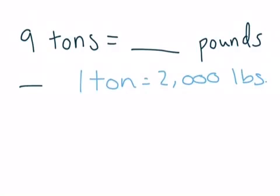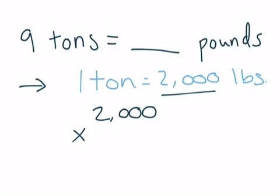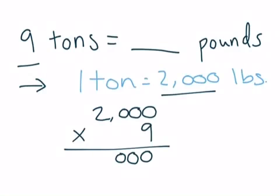So, if I know this information, then I can use this to solve for my equation that I have. So, I take my pounds, 2,000, and I want to multiply that by how many tons I have. So, I multiply that by 9. So, if you just quickly do the math, I have three zeros, and 9 times 2 is 18. So, I have 18,000 pounds. Wow, that's heavy.